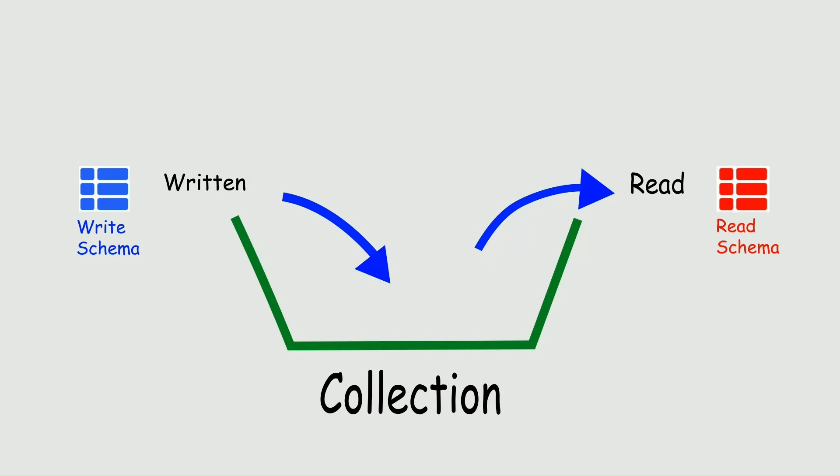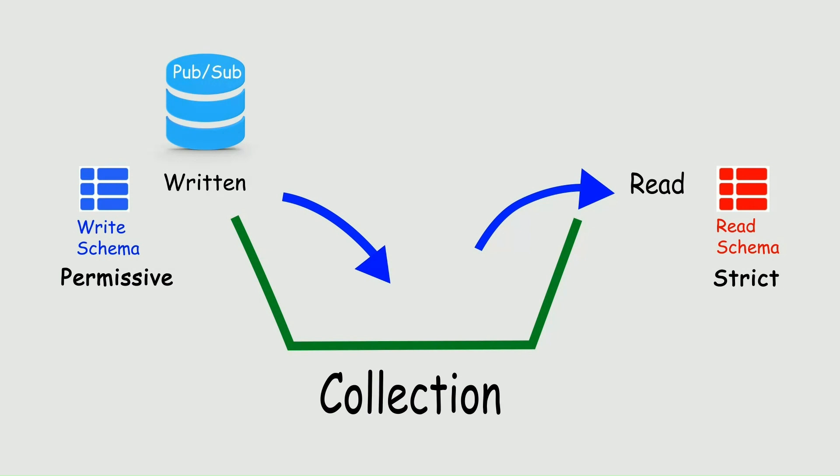For example, you may need to start capturing data now from a source system — say a PubSub system with short-lived historical data support or an HTTP endpoint — but you don't know or don't control the endpoint schema. You can capture the data with a permissive write schema and impose a stricter read schema on the data as you need to perform a derivation or materialization. You can safely experiment with the read schema at your convenience, knowing all the data has already been captured.